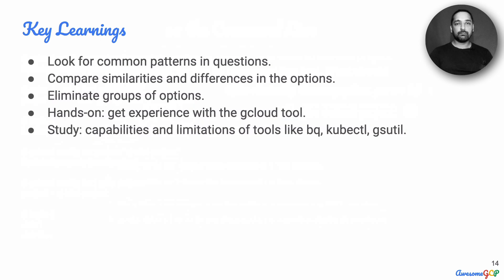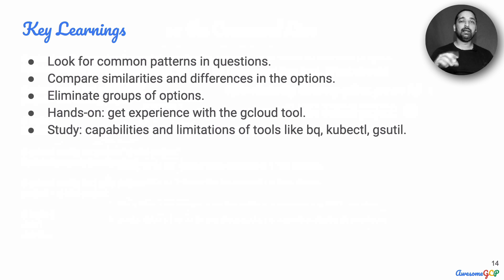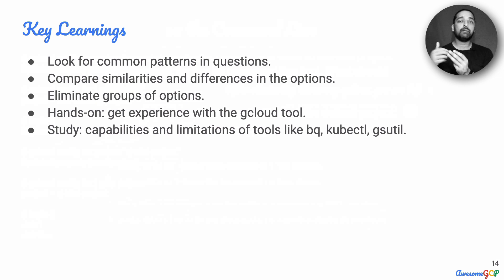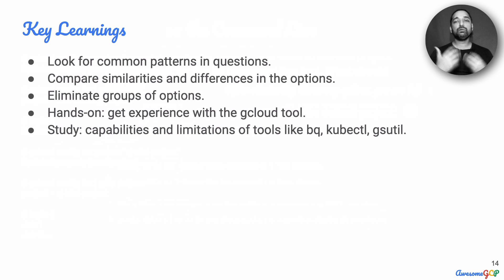What are the key learnings we can take away from this question? In the approach to answering these questions, one method I use is to look for common patterns. If I find the same wordings across different options, I group them together and see what within each group will help me eliminate maybe two of them. Look for both similarities and differences in the options — usually there'll be one command or sub-command that is slightly different. Based on that, you can eliminate groups of options and reduce the chances that you are wrong.